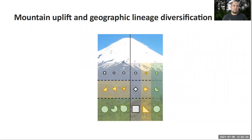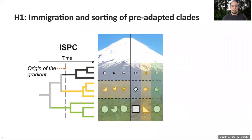However, the uplift of mountains and more generally the emergence of novel environmental conditions in the region can shape lineage diversification and the distribution of species and diversity in multiple ways. On the one hand, the emergence of novel environmental conditions can create opportunities for clades of species that are pre-adapted to these environments to colonize and sort in an ecological fashion across these different environmental conditions.